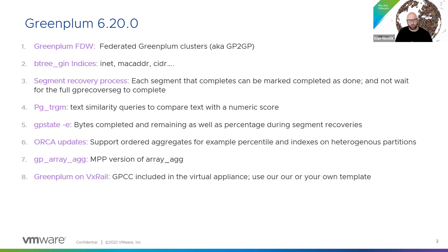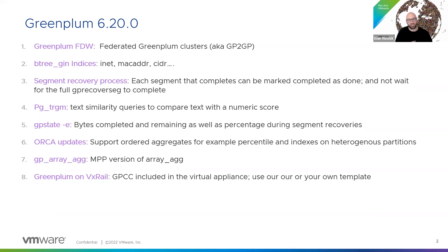Number eight: GreenPlum on VxRail. We have a virtual appliance — if you want to go with vSphere and a virtualization approach, VxRail is a hardware configuration and we have a full certification and a virtual appliance. You can download it to help automate or deploy GreenPlum using our VM template or creating your own. It includes GPCC, so everything comes up right away with GreenPlum and the command center ready to go. VxRail is a special product for VMware, and we've provided the full reference architecture and configuration to go with it.